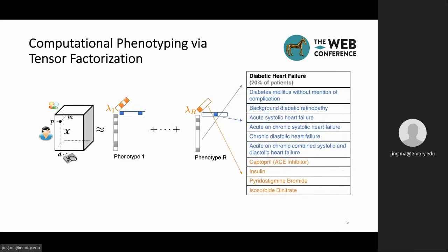Here is an example of a diabetic heart failure phenotype generated from our work. This phenotype consists of a group of patients who are diagnosed with those diagnosis marks in blue and prescribed with the medication marks in orange. In this way, a tensor factorization-based computational phenotyping would help reduce the high-dimensional EHR data into low-dimensional representations of medical concepts.